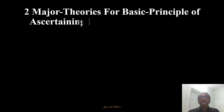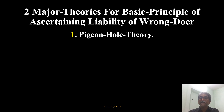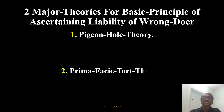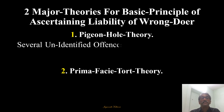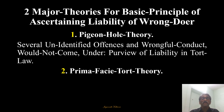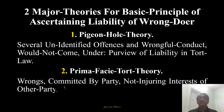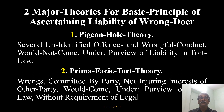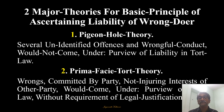There are two major theories for the basic principles of ascertaining liability of wrongdoers. The first is the pigeonhole theory, which is devised by Salmond, and another is the prima facie tort theory. Pigeonhole theory says several unidentified offenses and wrongful conduct which is unidentified would not come under the purview of liability in tort law. But prima facie tort theory says wrongs committed by a party that injure the interest of another party would come under the purview of tort law without requirement of legal justification.